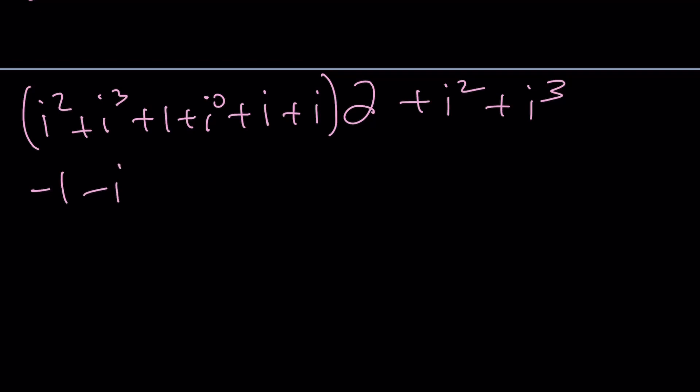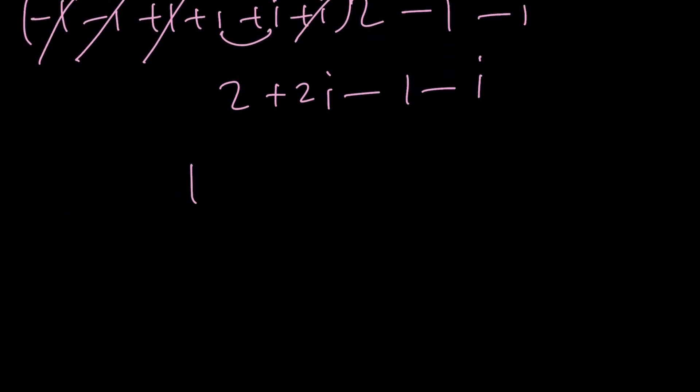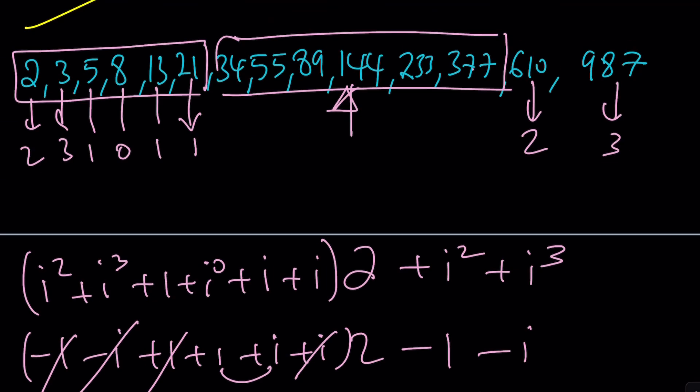Okay. i squared is negative one. This is negative i. Plus one, plus one. Plus i, plus i. Multiply that by two. This is negative one. Minus one. And minus i. Take a look. Negative one is going to cancel out. i is going to cancel out. We're going to add one plus i. Double it. Two plus two i. And then subtract one minus i from it. And you're going to end up with one plus i as your sum. If I didn't make any mistakes, and this should normally bring us to the end of this video.